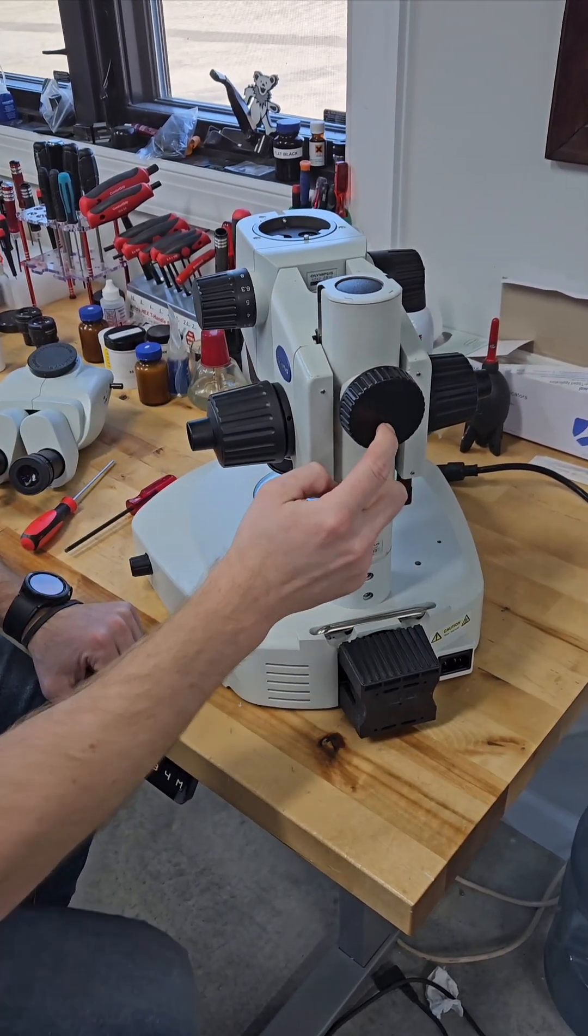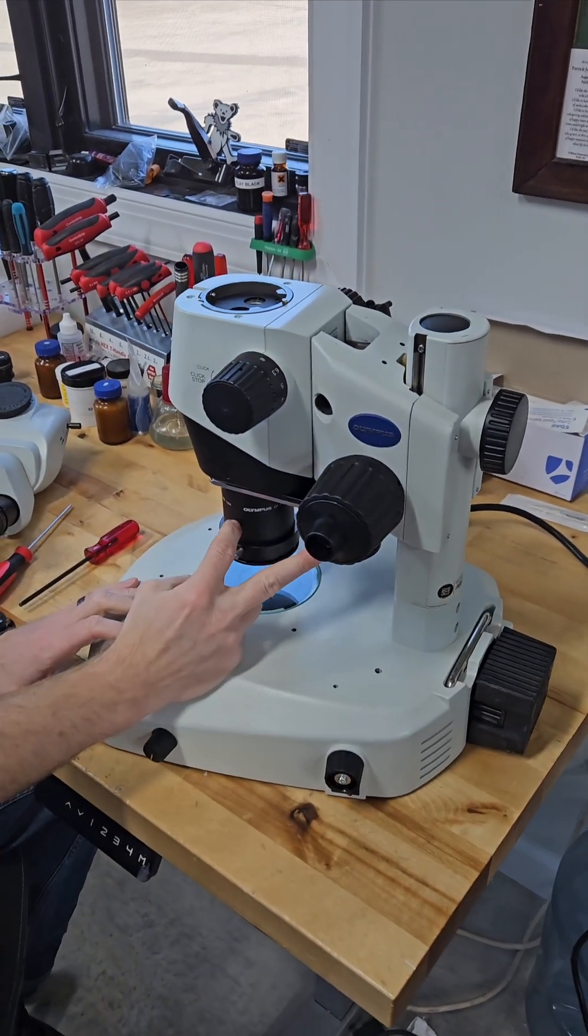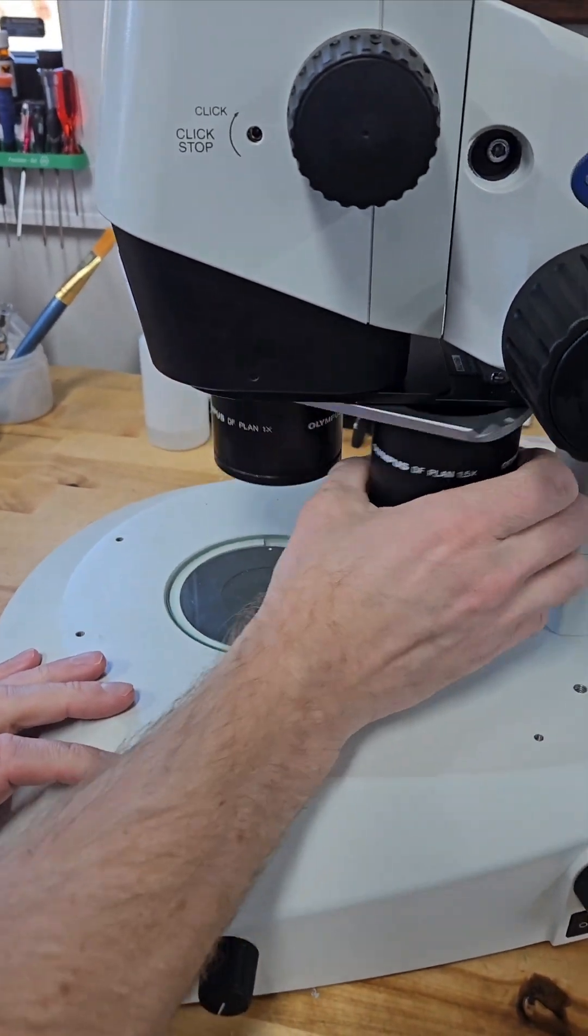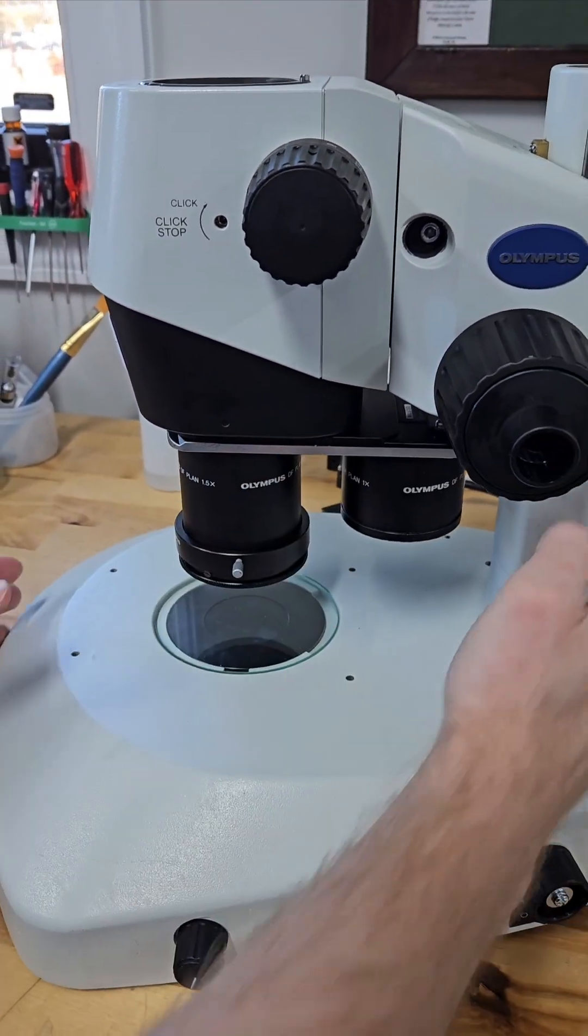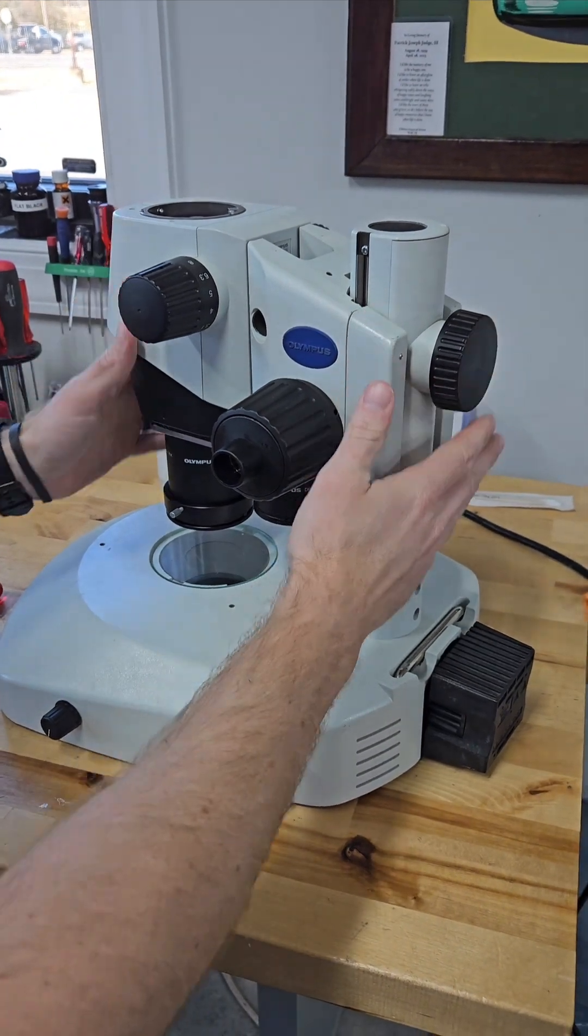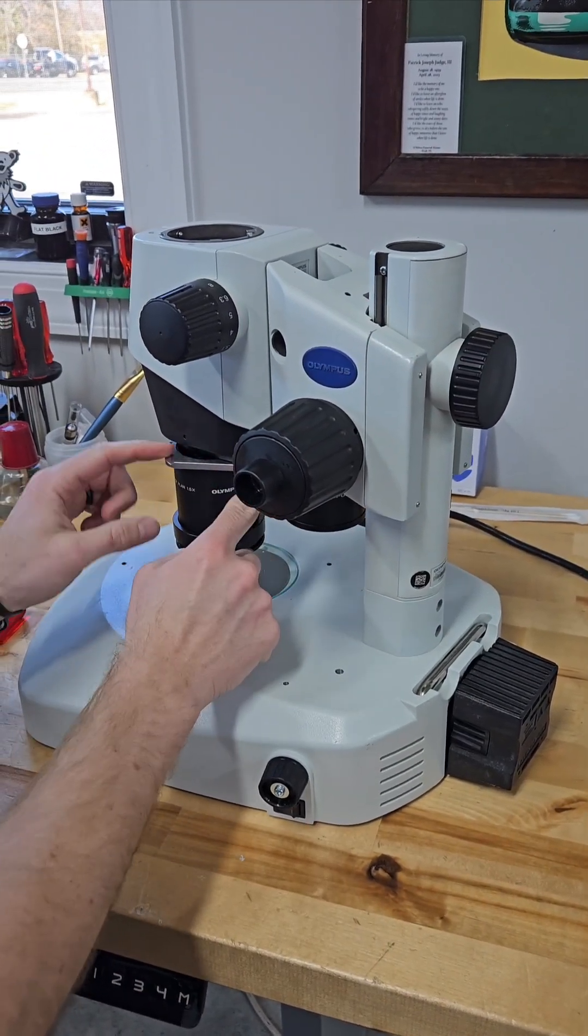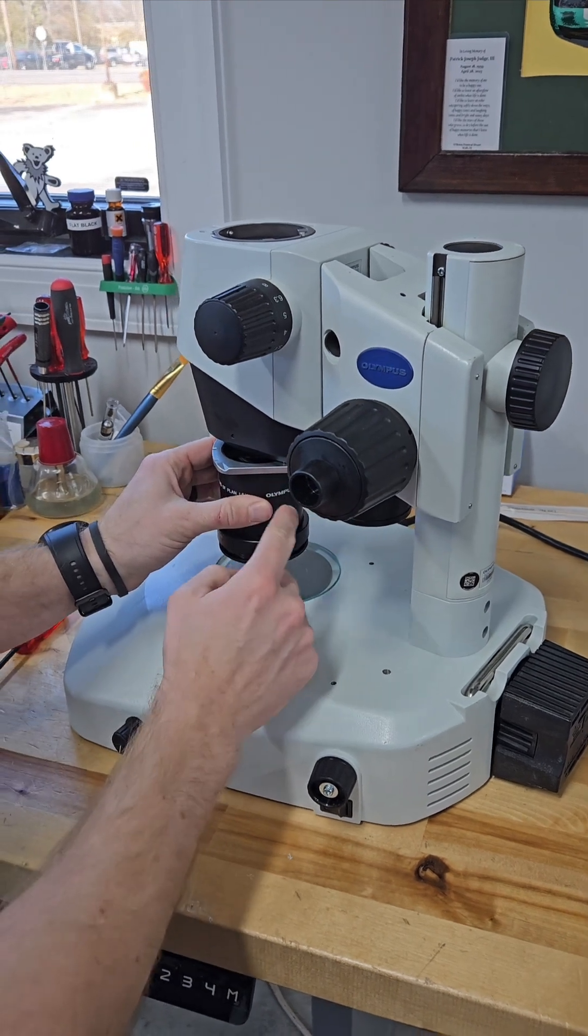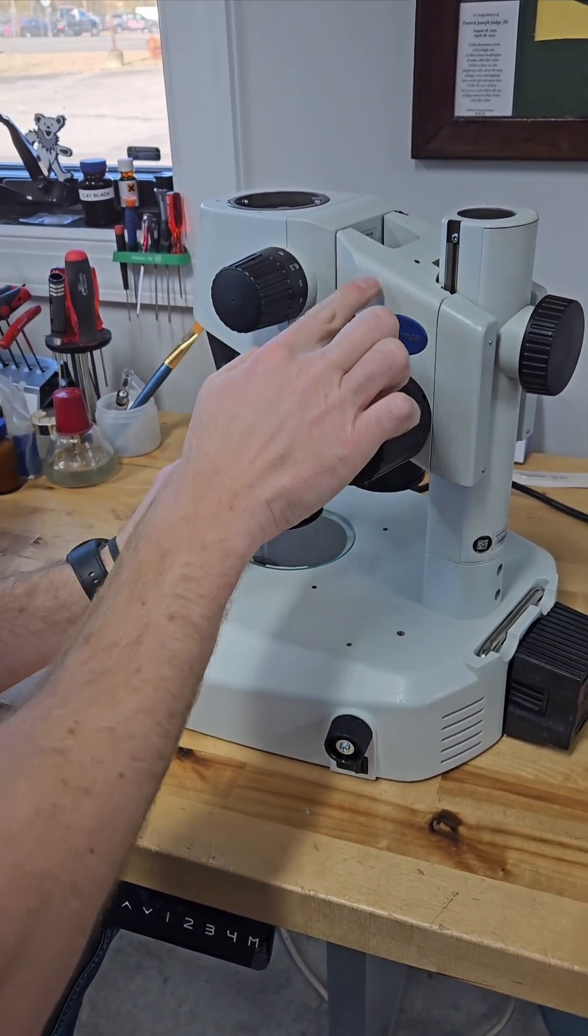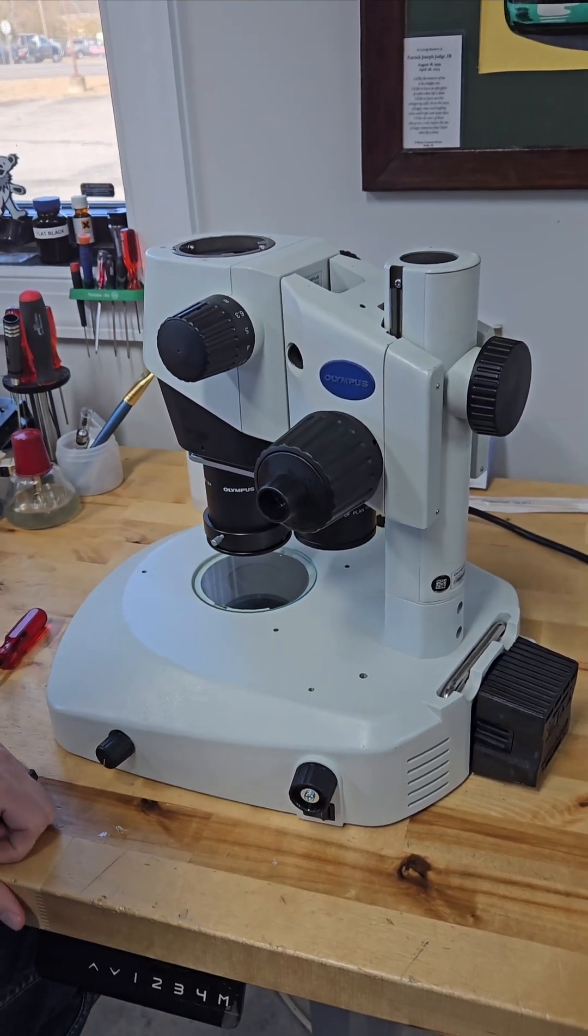And then here, this particular SDX has a dual nose piece on it, so you can have two objectives on it. The reason I show you that is because we have to take the whole assembly off and then we're going to have to remove these two lenses to get the scope portion off the focus mount. It slides off on a dovetail and we're going to show you how to do that right now.